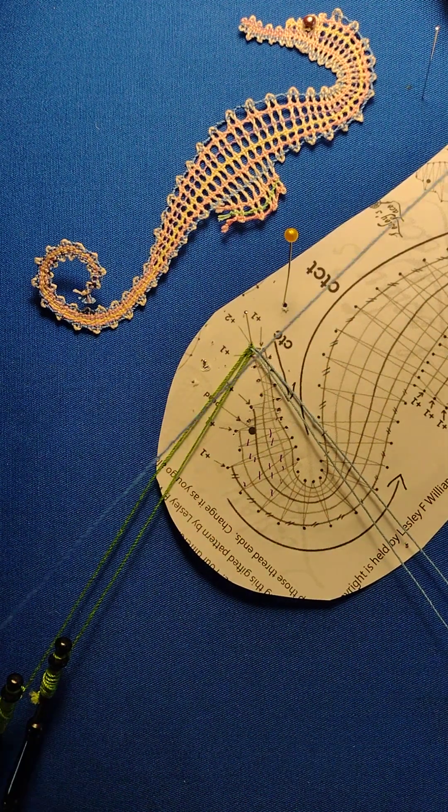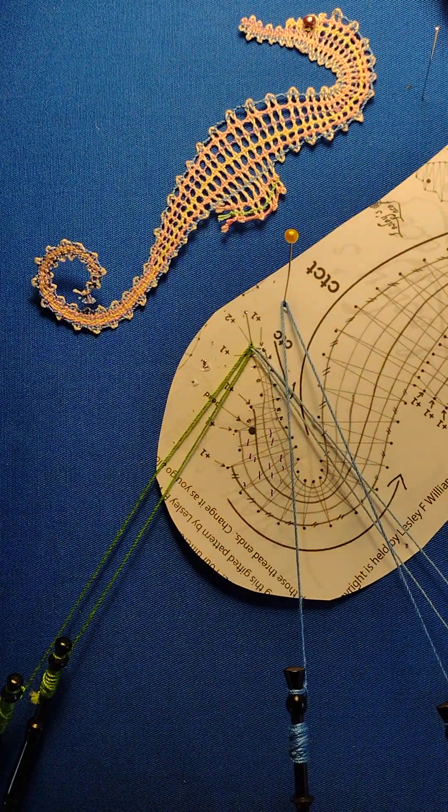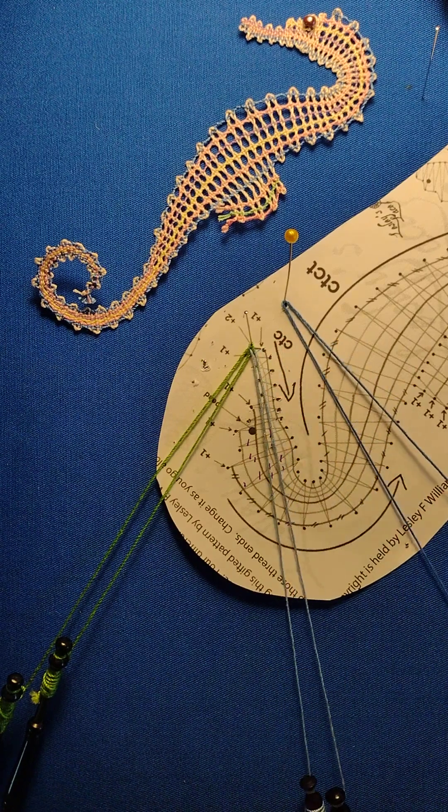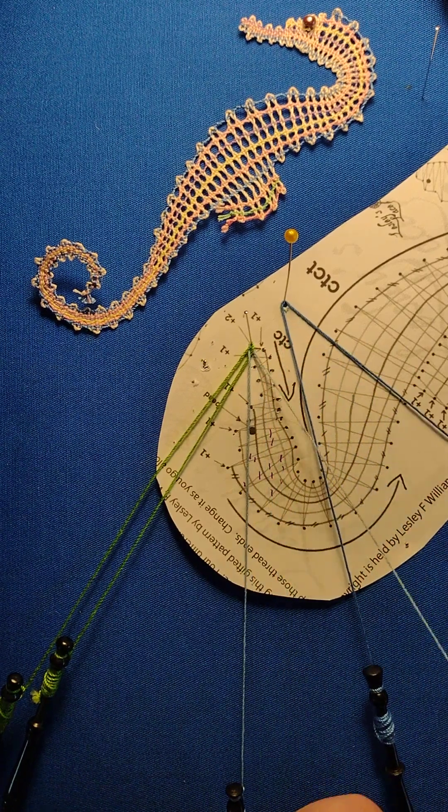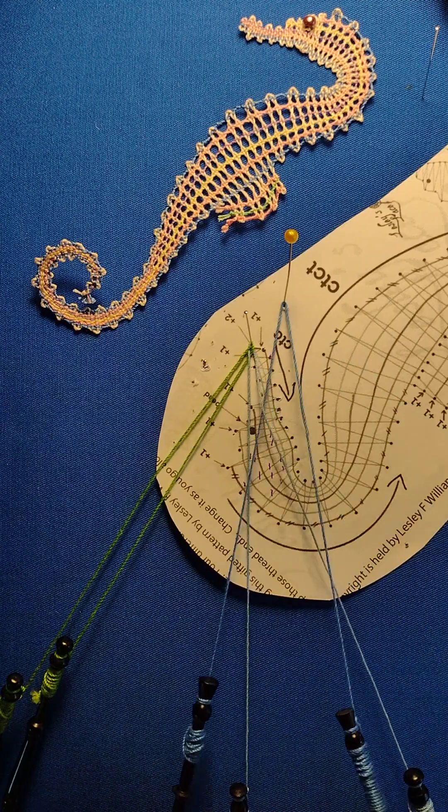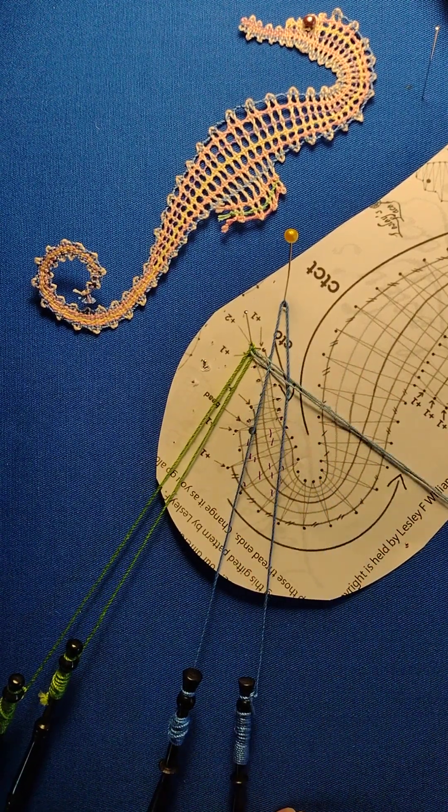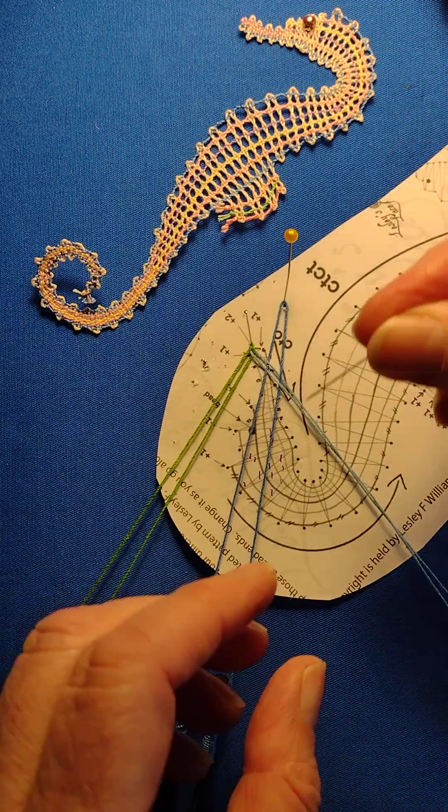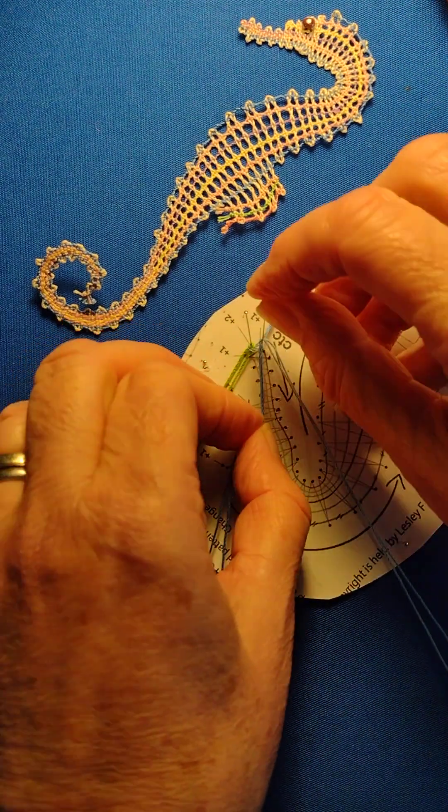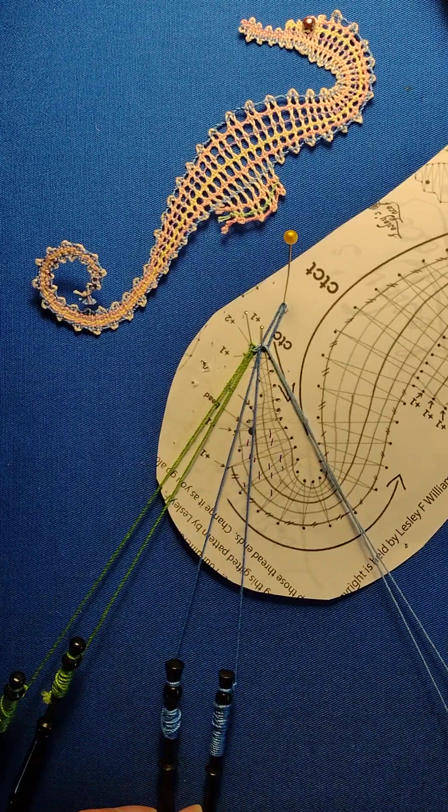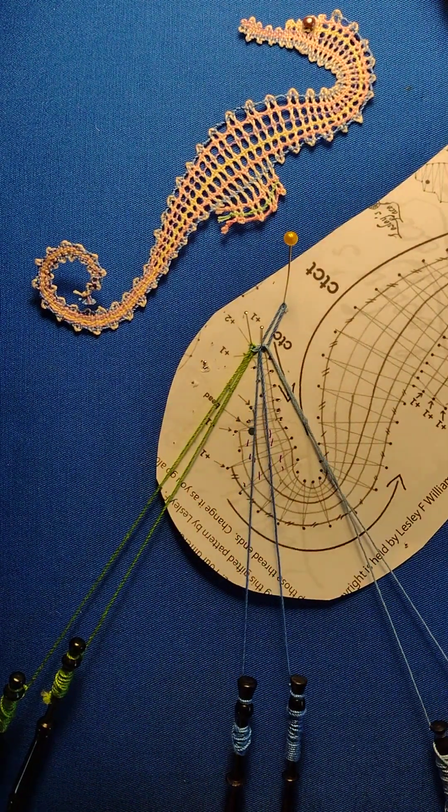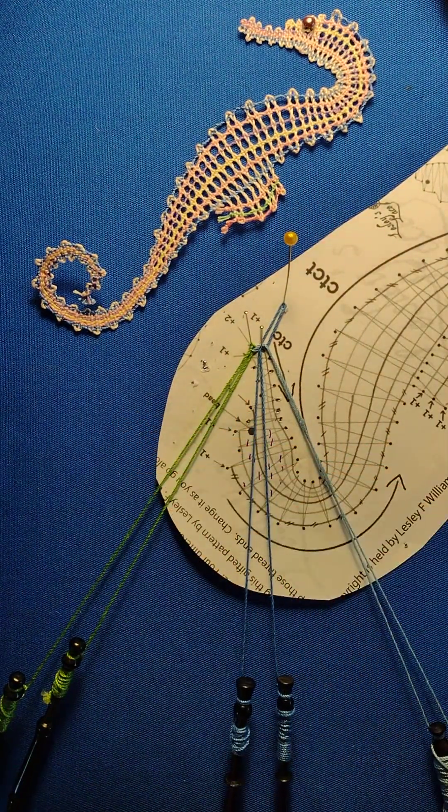Take another passive pair with a short length on, hang that to the right and we're going to work through that with cloth, sorry cross, twist, cross, twist, twist twice on your workers, take a pin, put it in that second pin hole, leave this in for the moment and I'm going to work back across.